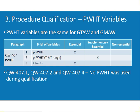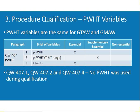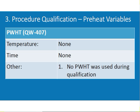QW-407 is PWHT — it is an essential variable. No PWHT was used during this qualification. PWHT is not always required; if thickness is more than a certain value (around 20 to 25 mm), then PWHT may be needed. The procedure qualification records what variables are essential and non-essential for QW-407: temperature, time, and other parameters — no PWHT was performed in this qualification.